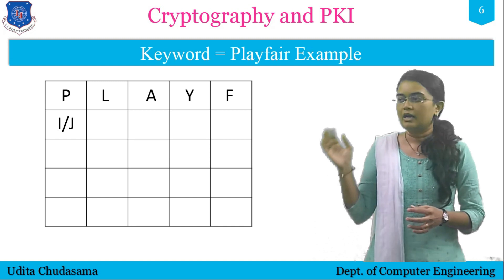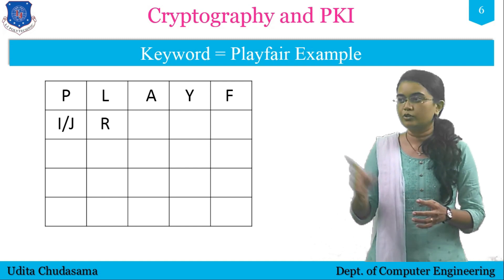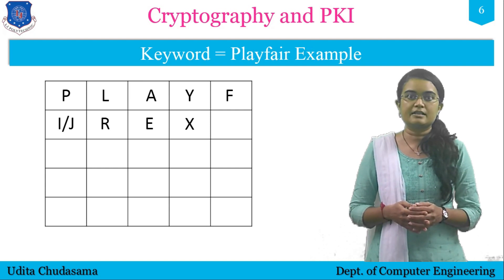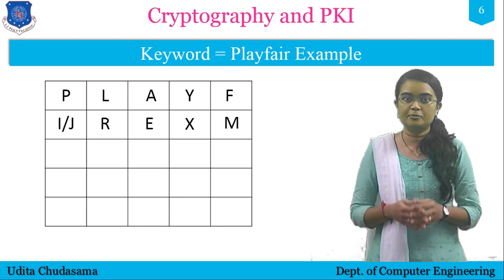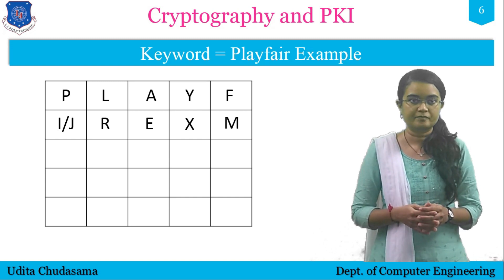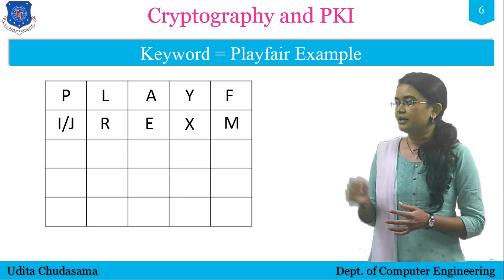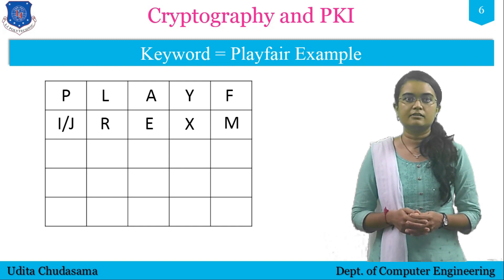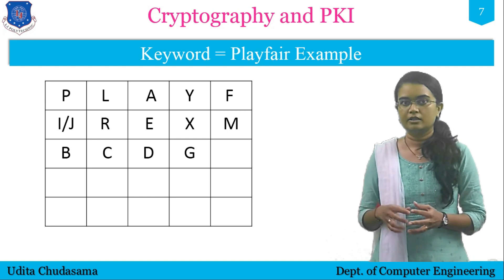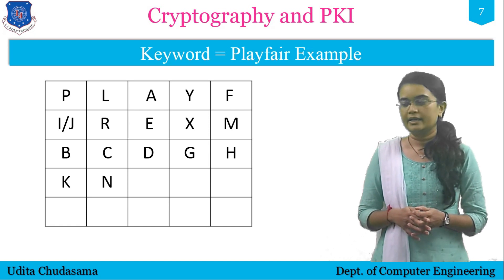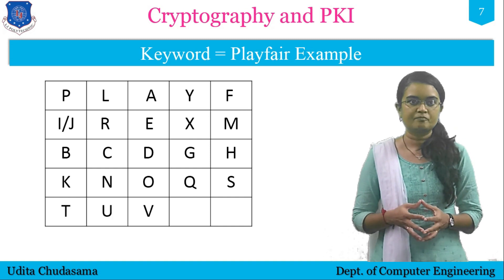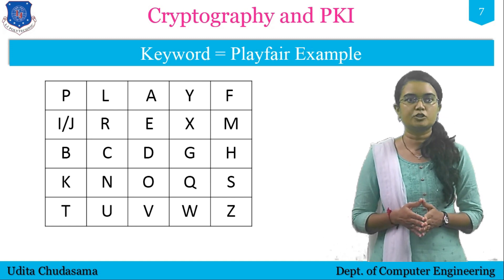Continuing with the keyword letters: R, E, X. We do not repeat duplicate letters, so the last keyword letter placed is M. The remaining empty cells are filled using letters from A to Z that are not already in the matrix. Since A is already placed, we continue with B, C, D, G, H, K, N, O, Q, S, U, W, and Z. We have now successfully generated the matrix for encryption using Playfair Cipher.